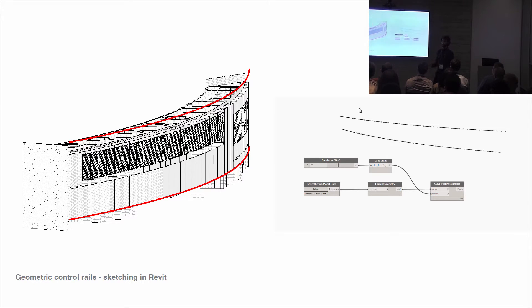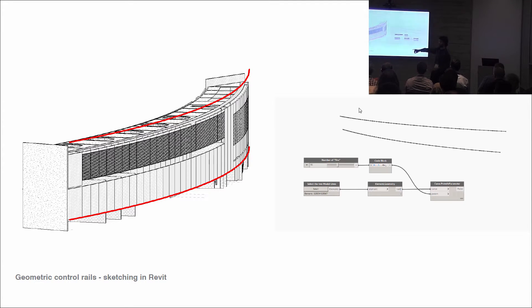It's a really nice, concise way of defining something with Dynamo. We start at 0 up to 1, and we've got a number of fins in this parameter. We slide down and subdivide that curve using curve points at parameter. Notice how that's set to the cross-product version that David spoke about earlier, and that gives us all the possible results of that intersection of fins against these two model lines.